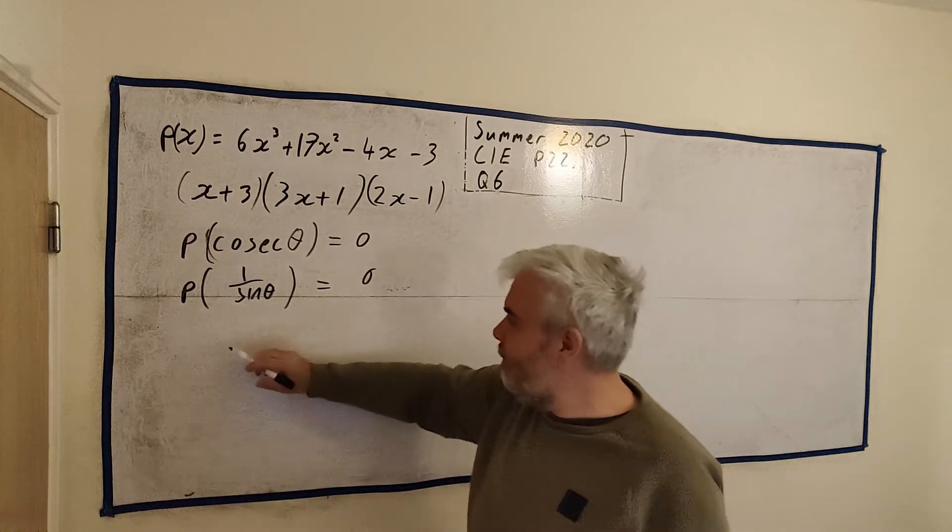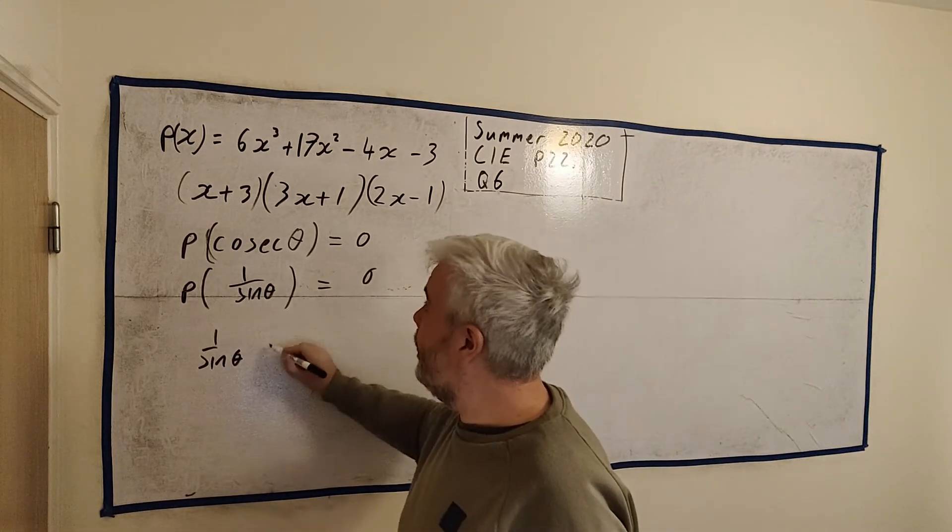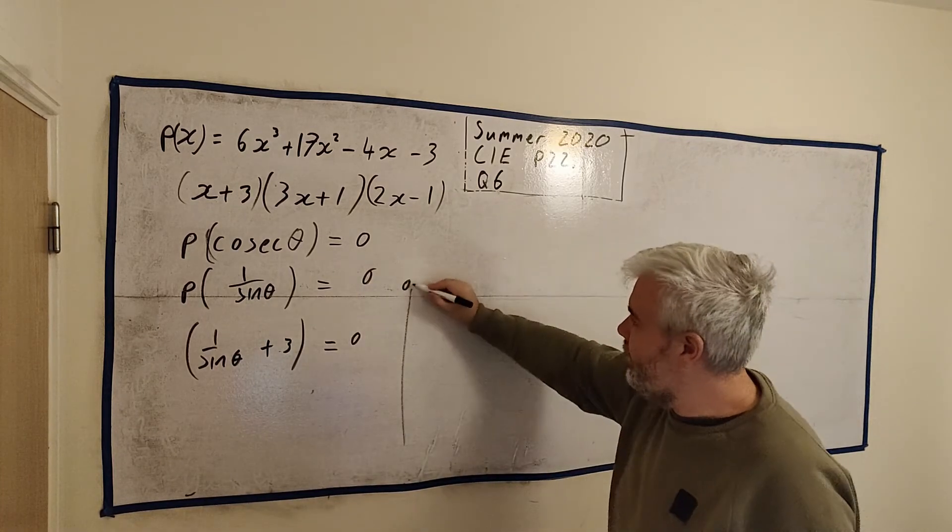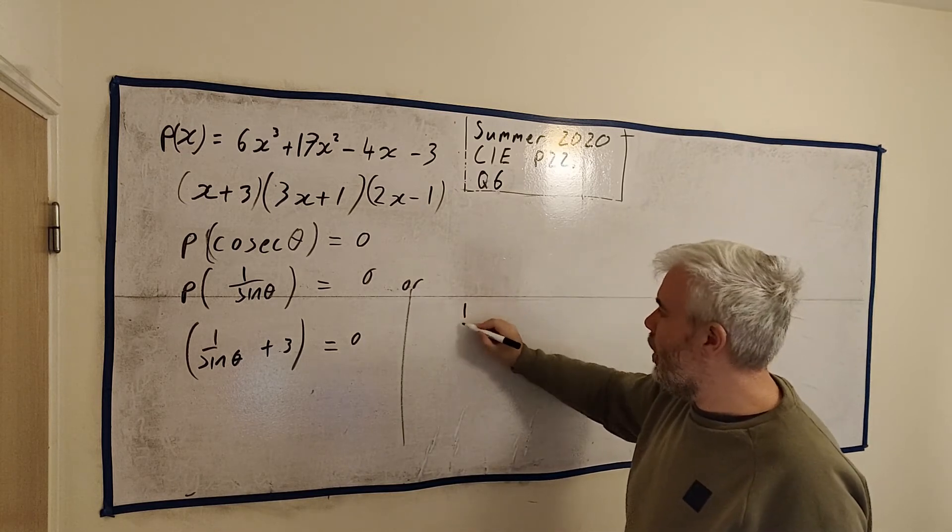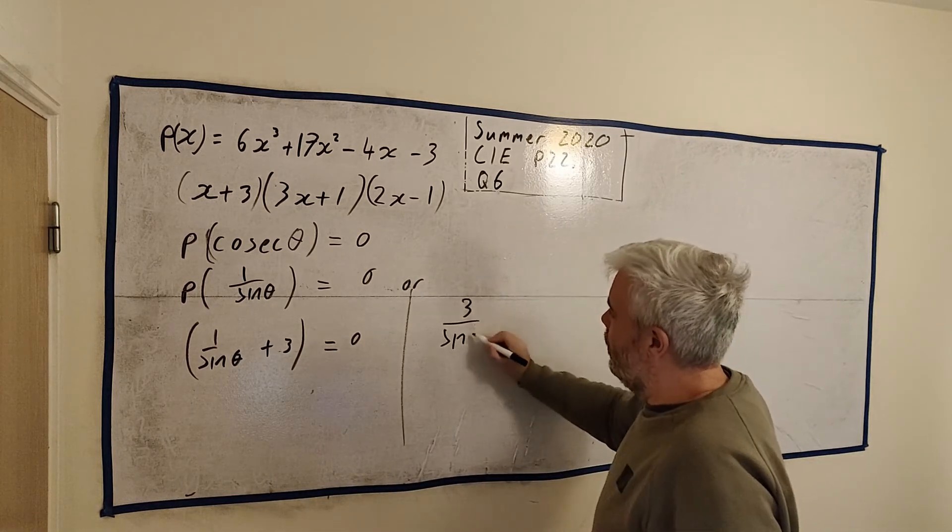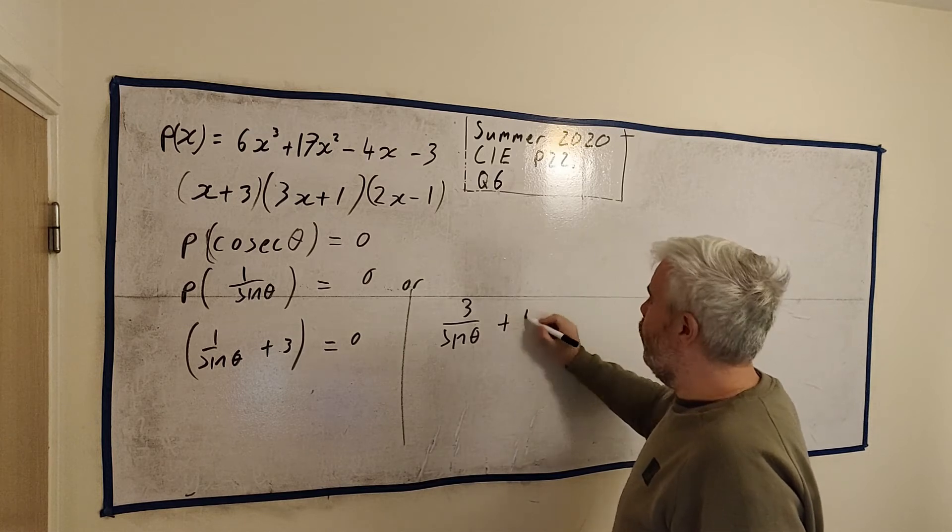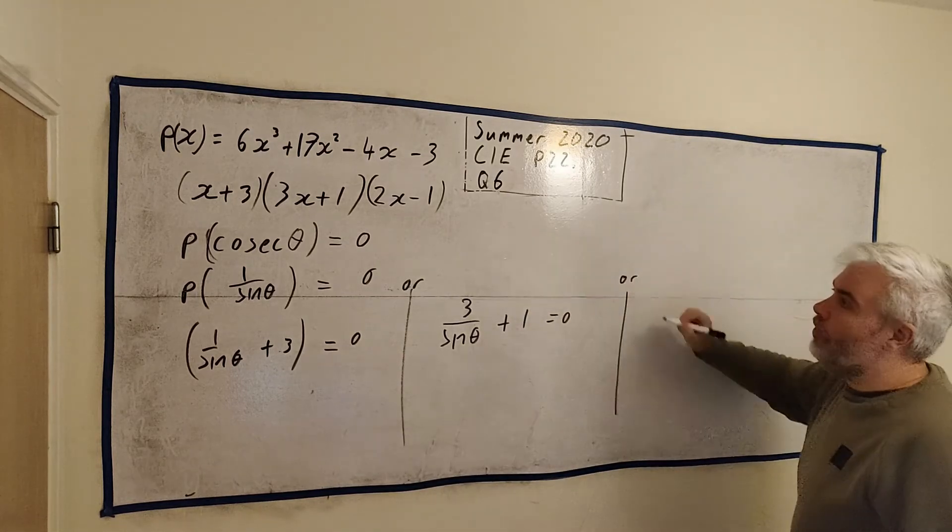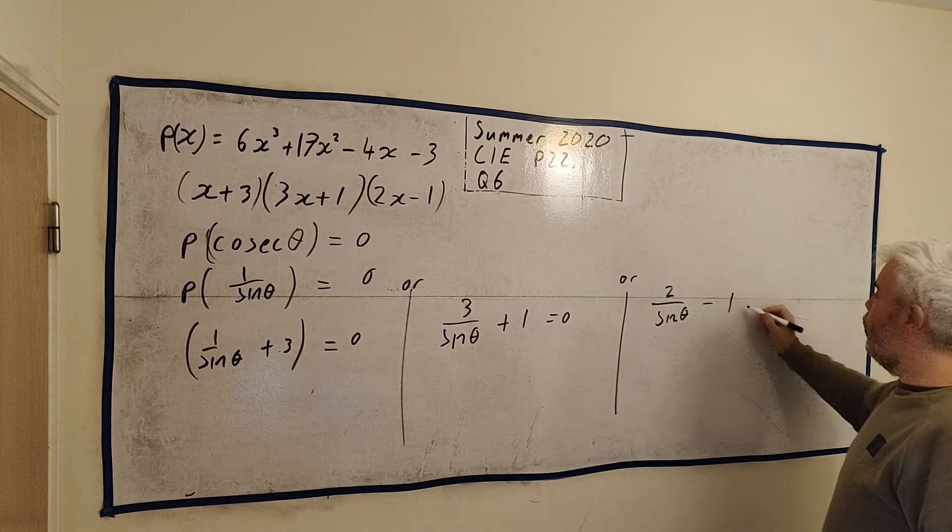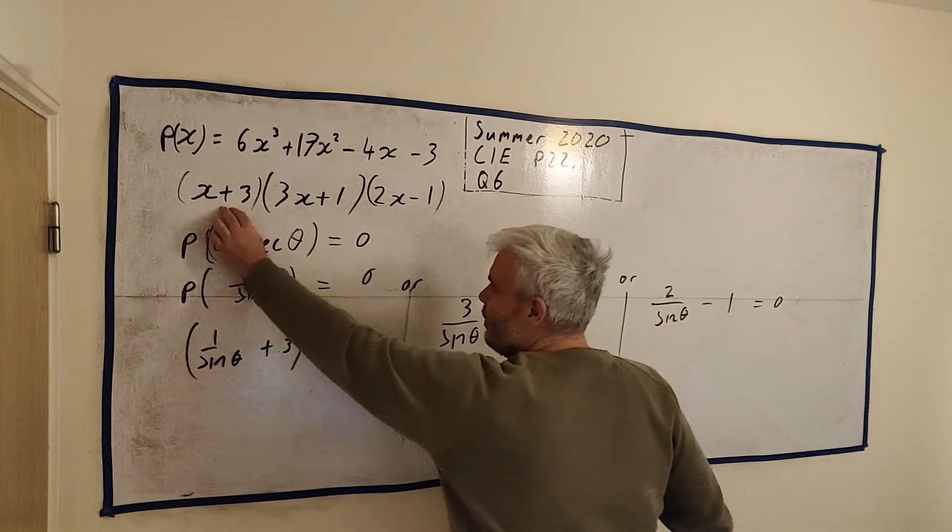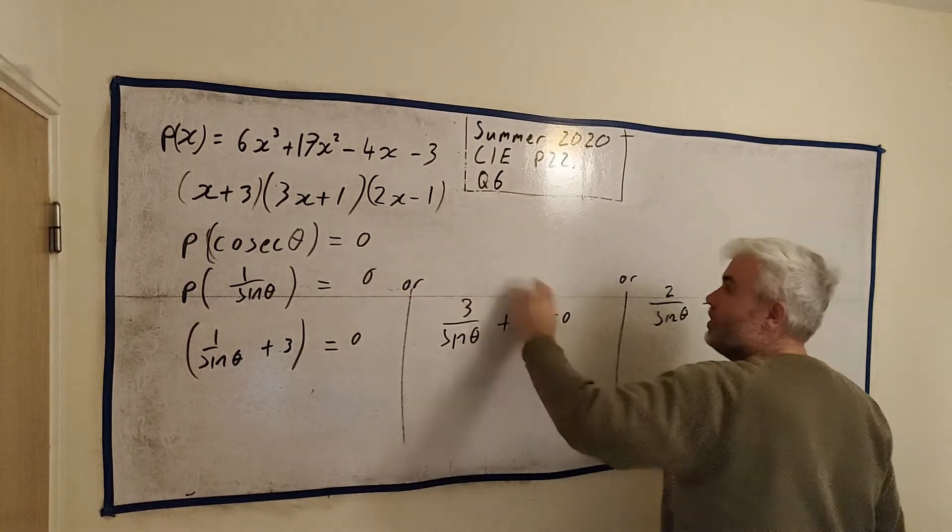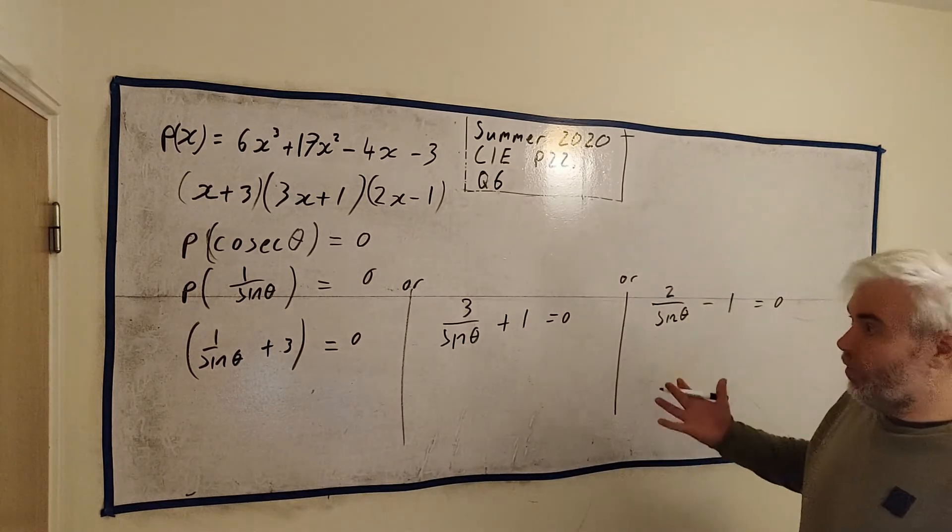So if this equals 0, well, that means 1 over sin theta plus 3 equals 0. Or 3 times 1 over sin theta plus 1 equals 0. Or another possibility is 2 over sin theta minus 1 equals 0. So I'm getting this from each of the factors. I'm just putting in 1 over sin instead of x. And one of these is the answer, or maybe there's multiple answers here.